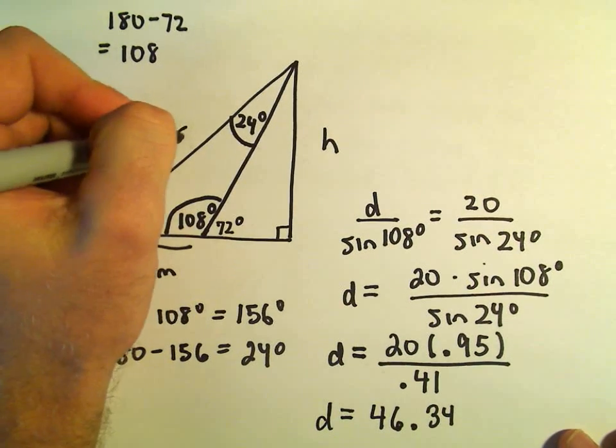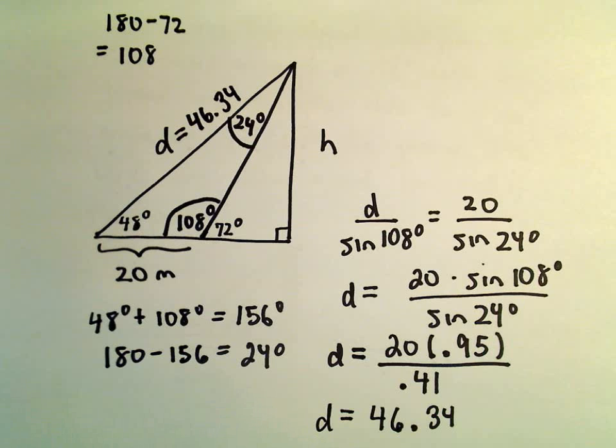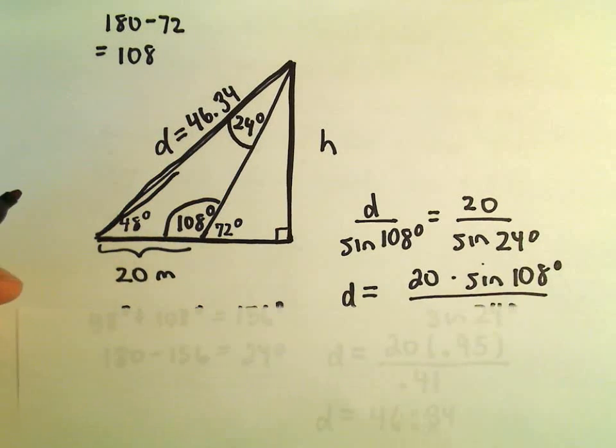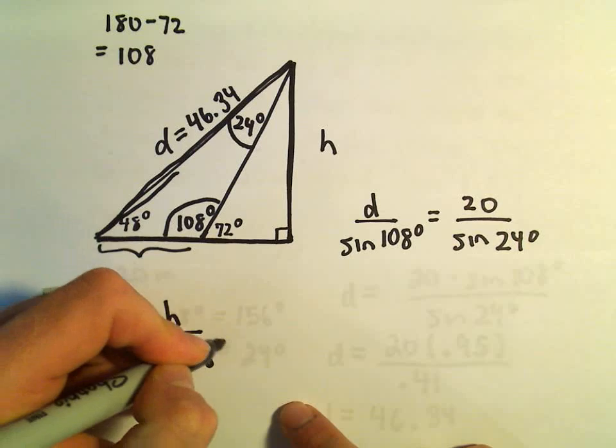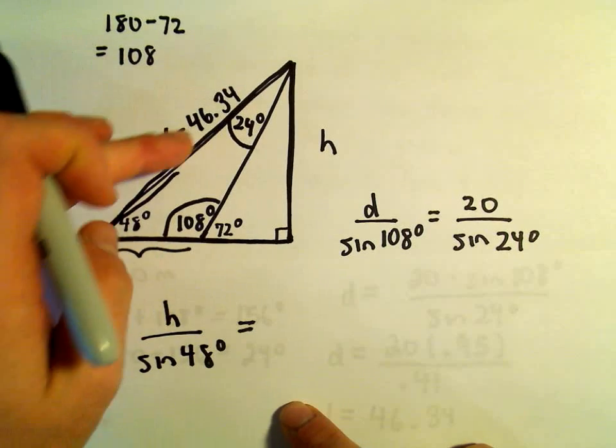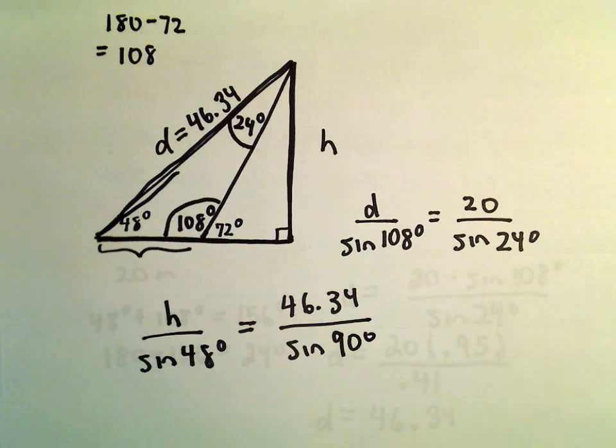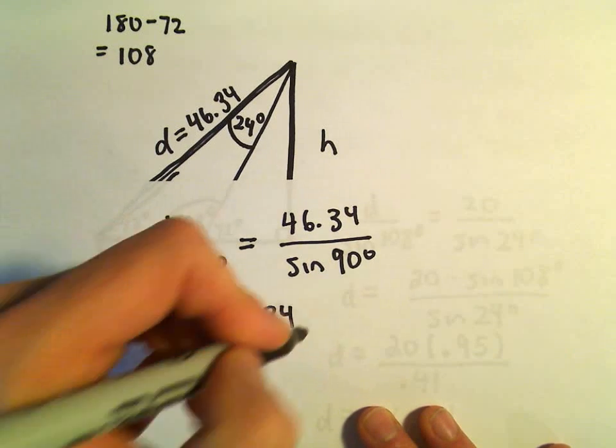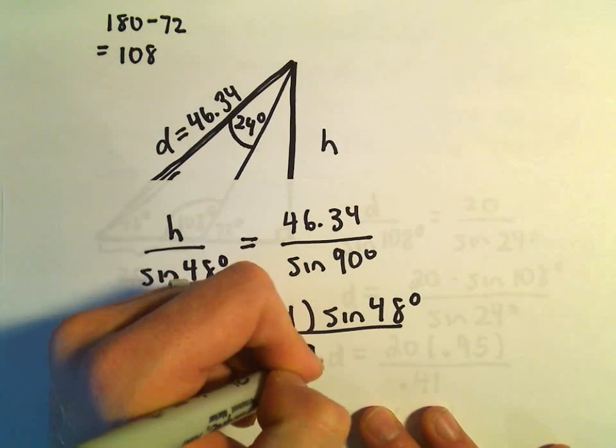So now we know this hypotenuse of the big triangle, we know that that's 46.34 meters. And now we'll just do the same thing, we can use the law of sines again. So if you think about the big triangle, we're trying to figure out the height h. So h over sine of 48 degrees would equal 46.34 over sine of 90 degrees. And again, now we're pretty much there, we can just multiply both sides by sine of 48 degrees. So we'll get 46.34 times sine of 48 degrees over sine of 90 degrees.